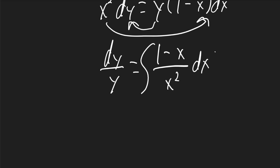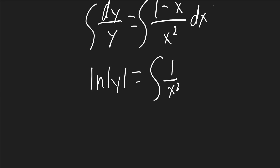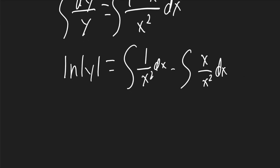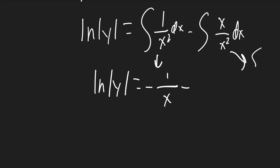I'll take the integral of both sides. On the left, it'll be ln y. And on the right, I'll split it up into two different integrals. The first will be 1 over x squared dx and the next one will be x over x squared dx. That'll be ln y. This first one will evaluate to negative 1 over x. And this one is just the integral of 1 over x, which will be ln x plus c.